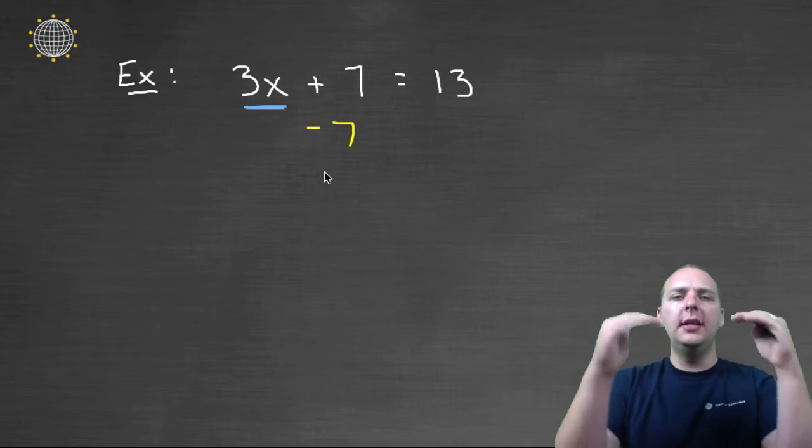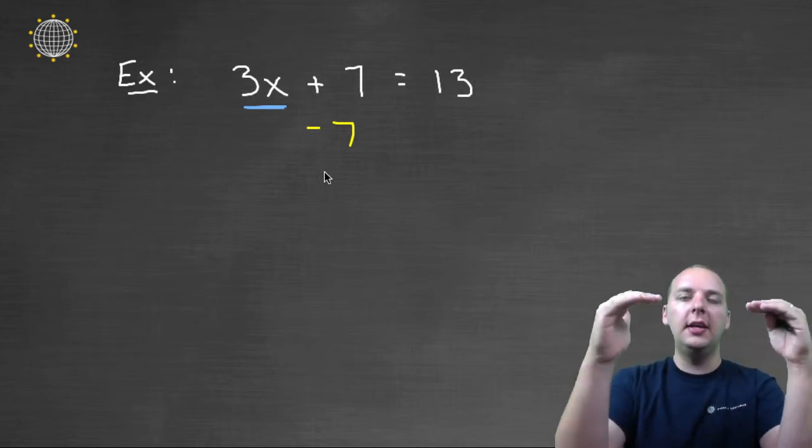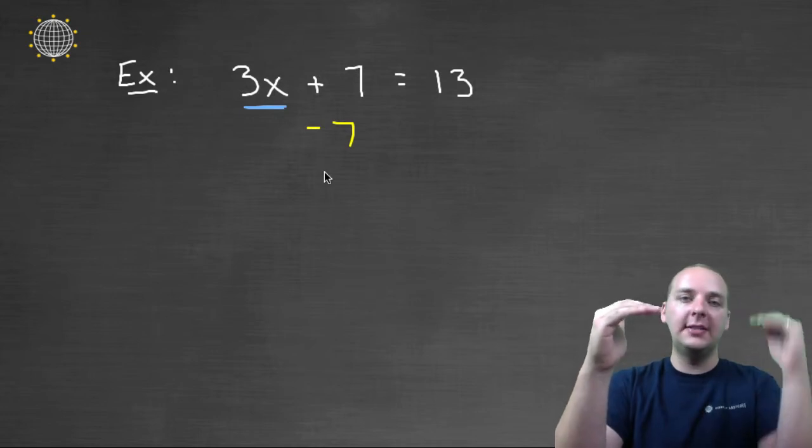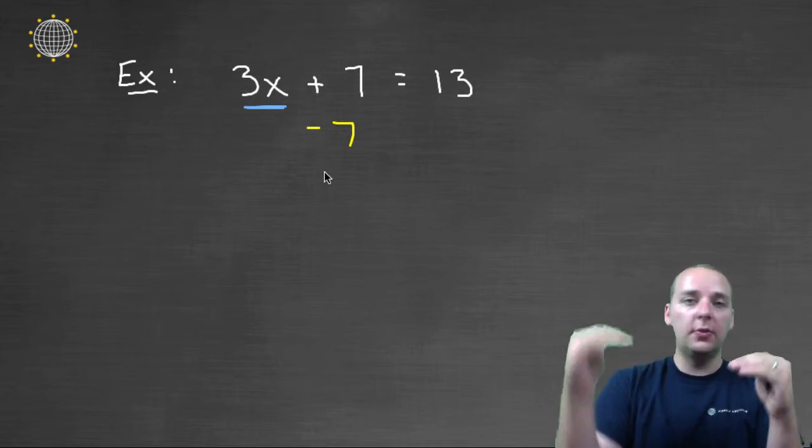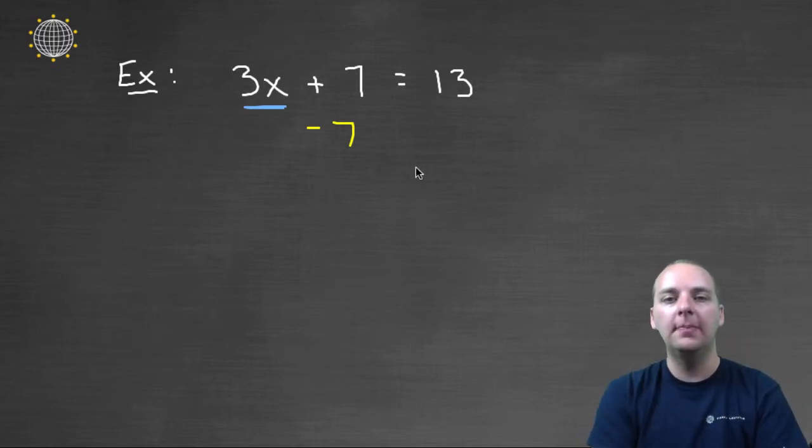And think about it, if these two are originally equal, 3x + 7 and 13, if you decrease the left side by 7, you need to decrease the right side by 7, so that the equality is maintained. So we'll subtract 7 from 13 as well. +7 and -7 negate each other, they cancel each other. And so we'll have 3x, just a 3x, on the left hand side, equal to 6 on the right hand side.